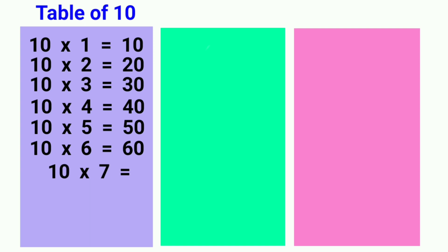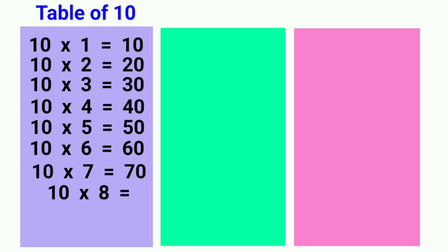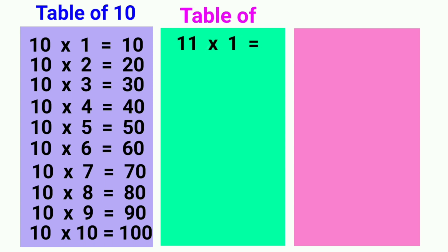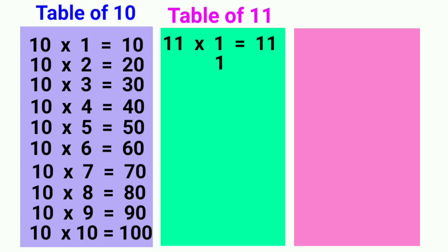10 sevens are 70, 10 eights are 80, 10 nines are 90, 10 tens are 100. 11 ones are 11, 11 twos are 22,